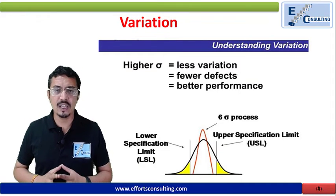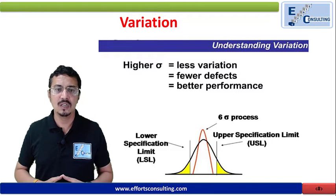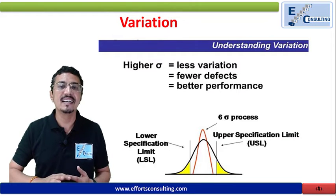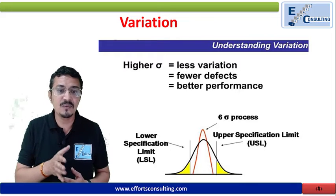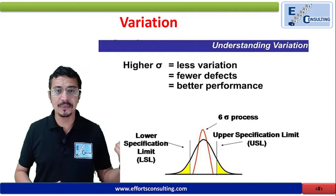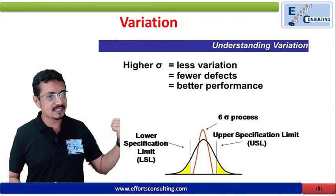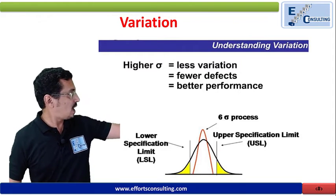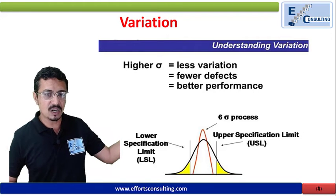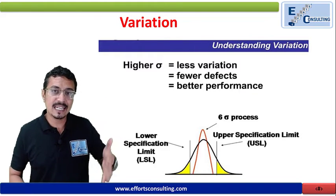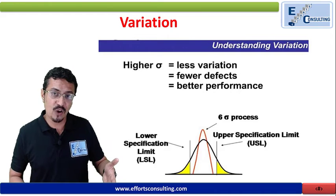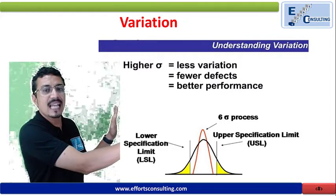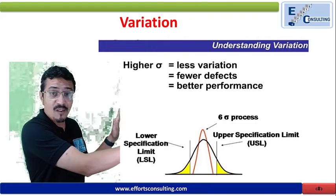Let us understand variation. If you are having a higher Sigma value, you will be having less variation. Sigma is the indicator of the standard deviation. If you are having less variation, then the deviation would be less. Here in this particular figure, you can see the lower specification limit and upper specification limit. If you are working at the Six Sigma level, then you are somewhere within this particular range — meaning you have controlled your process in a way that you are working within that range.